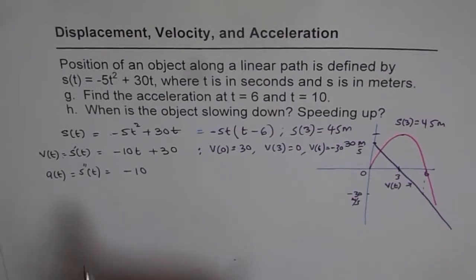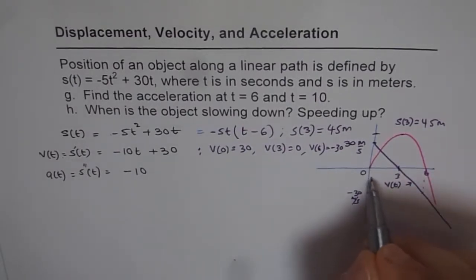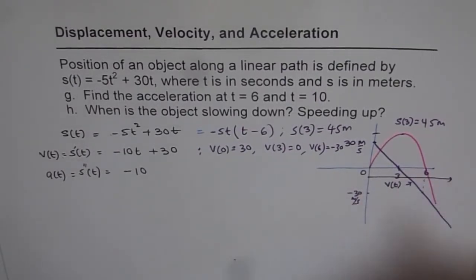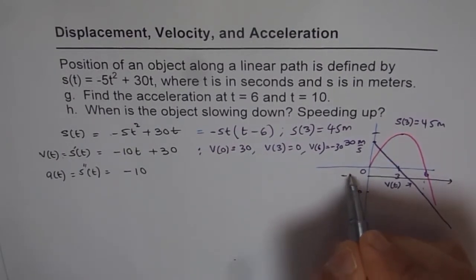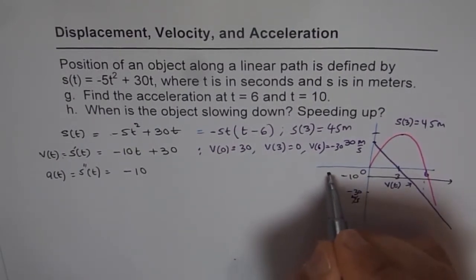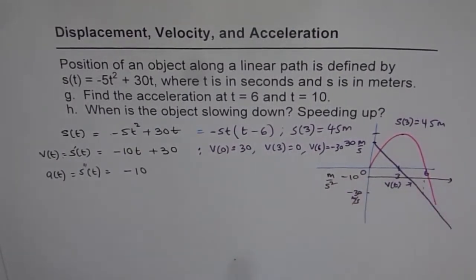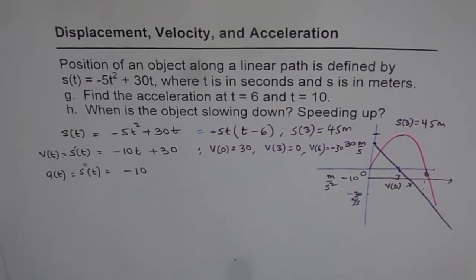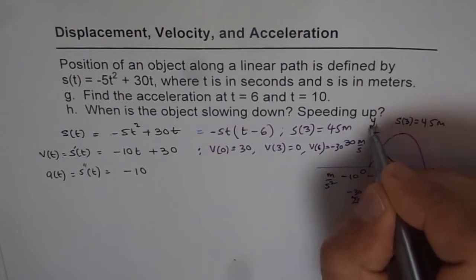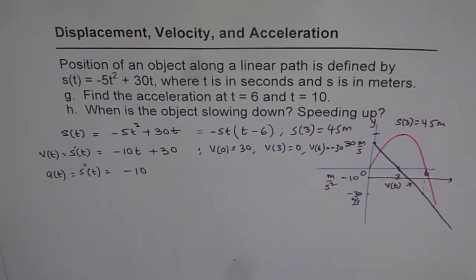Now for acceleration, what do we get? Acceleration is -10 throughout. Somewhere here, this is my acceleration, -10 meters per second squared. We have three different graphs on the same coordinate system. Since the units are different, we're not writing anything on the y-axis as a unit.